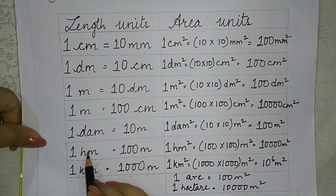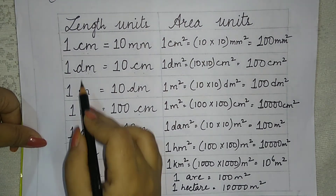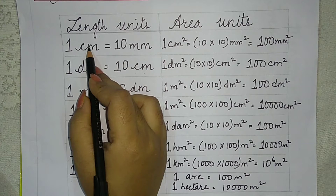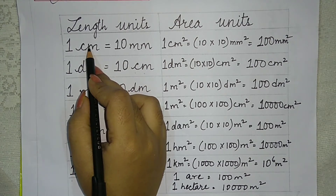The hierarchy from largest to smallest is: kilo, hecto, deca, meter, deci, centi, and the smallest unit is millimeter.